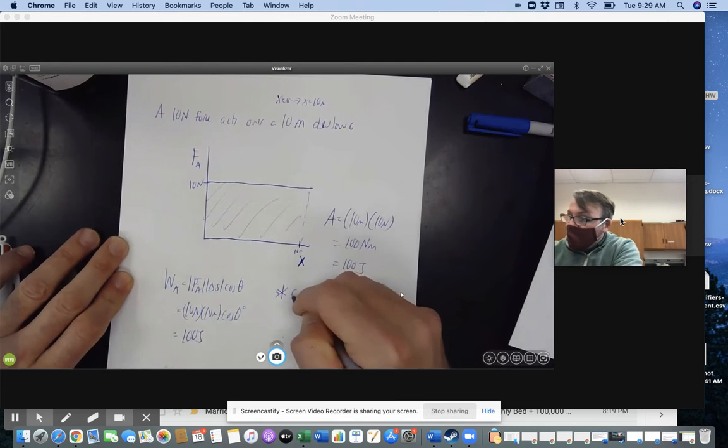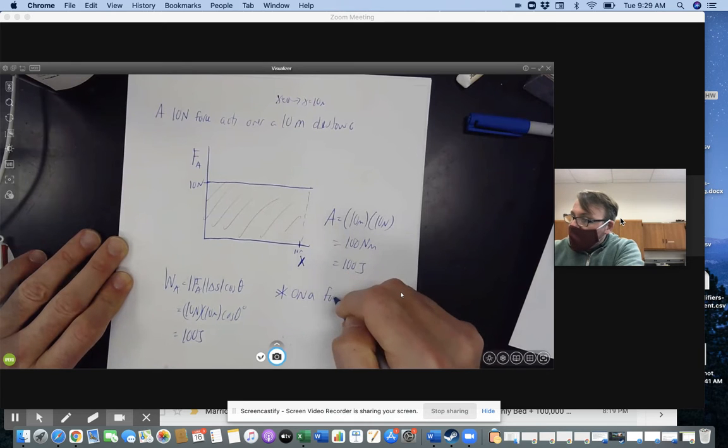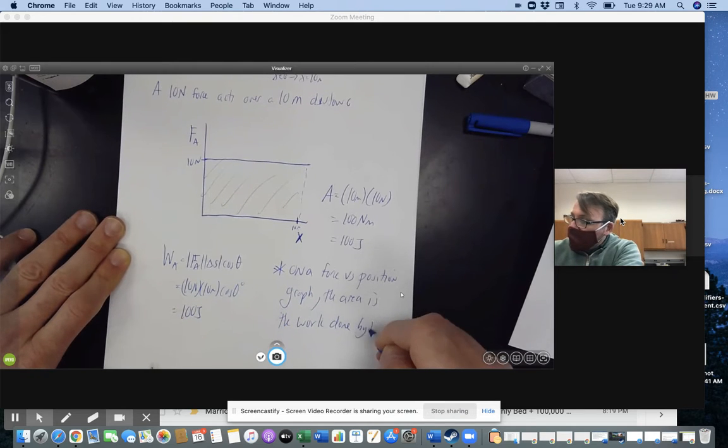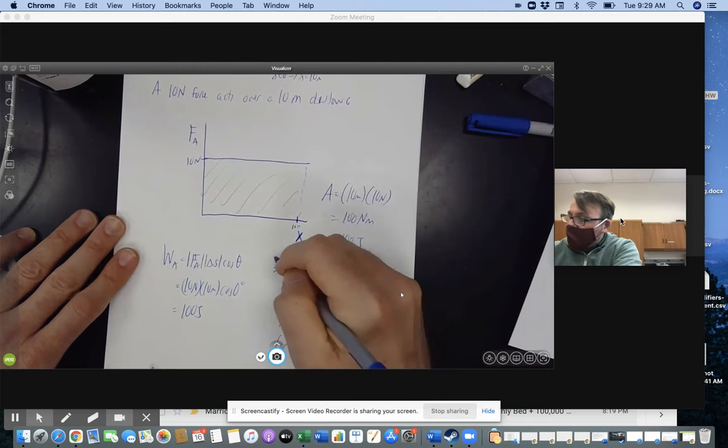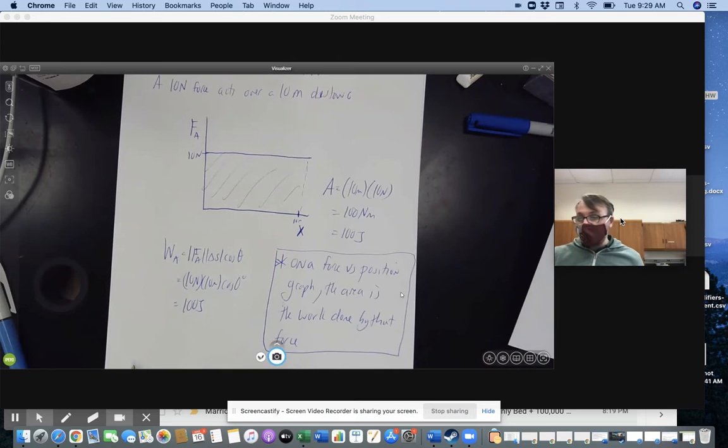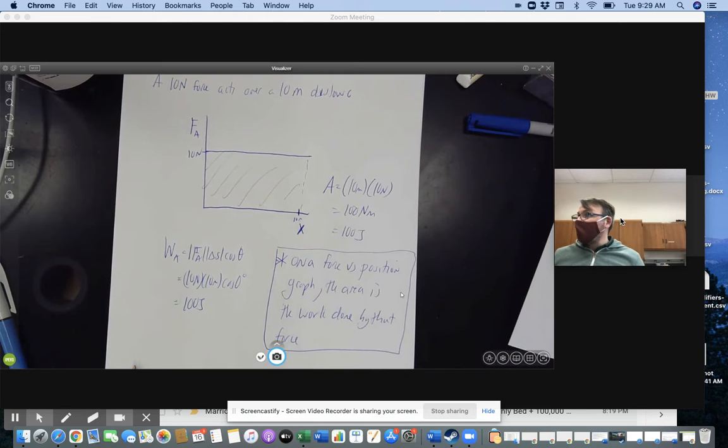Take a note, on a force versus position graph, the area is the work done by that force. And that's really handy because that allows me to solve the problem with the spring force from before, which was a non-constant force, or at least in this case, it does. But there's our little fact. The force versus position graph, the area is the work.